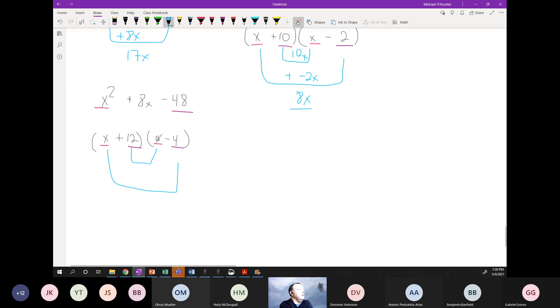And let's do the middle checks. 12 times x is 12x. X times negative 4, negative 4x. Add those together, and I'm going to get 8x. Okay.